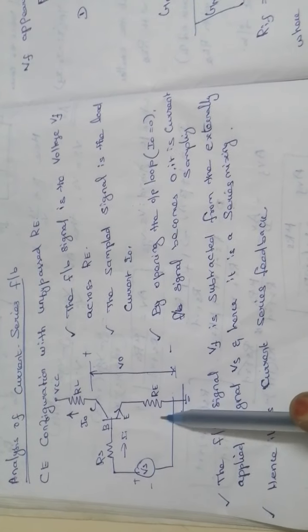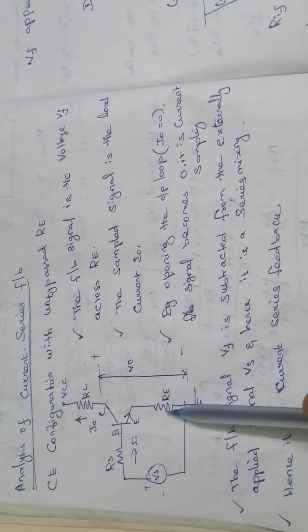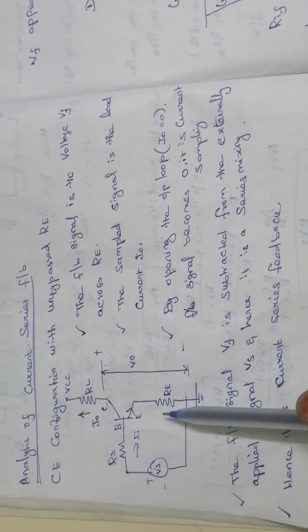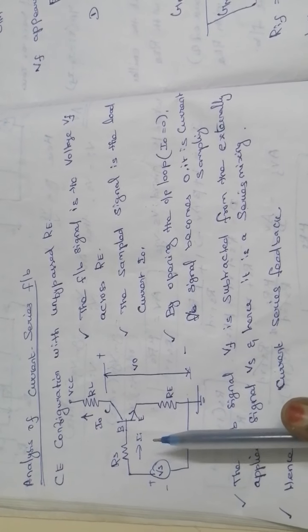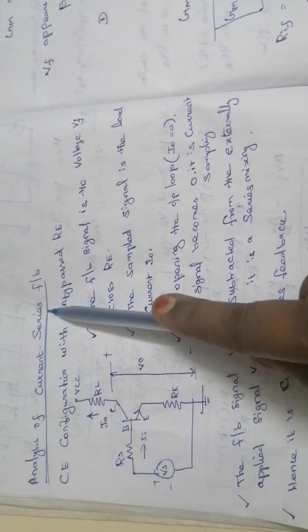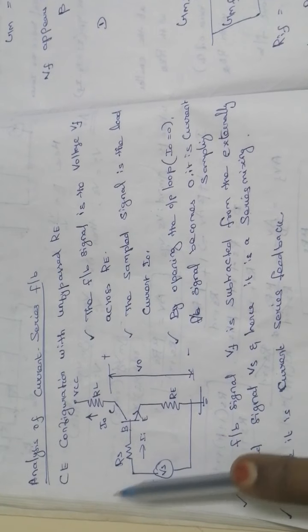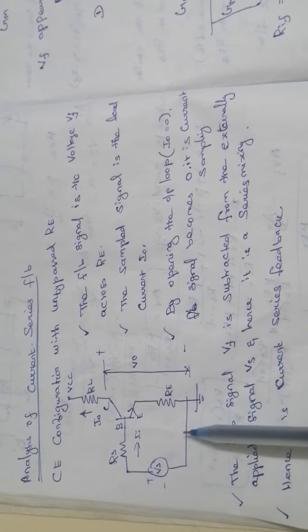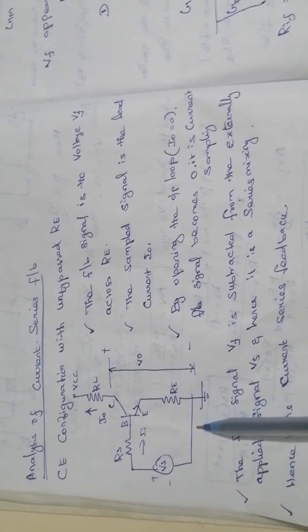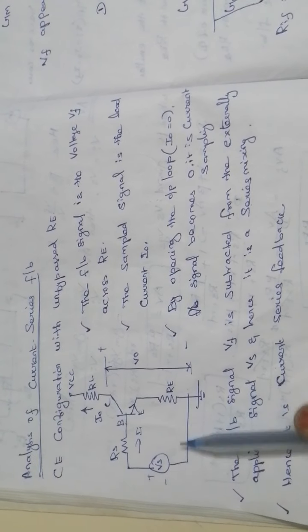In the previous video I covered voltage series feedback. The first term — current or voltage — represents the output circuit, and the second term — series or shunt — is the input mixing circuit. So from this circuit we are going to identify what type of feedback topology this is, and how to find whether the sampling is current or voltage.